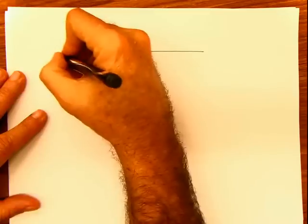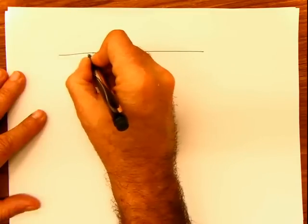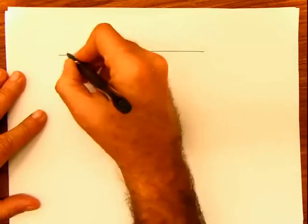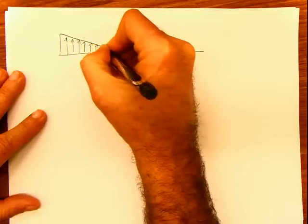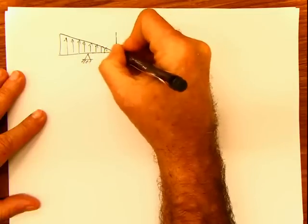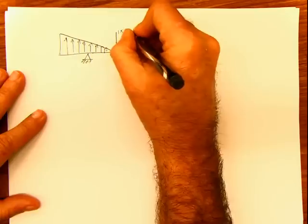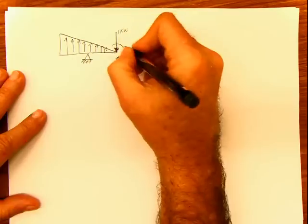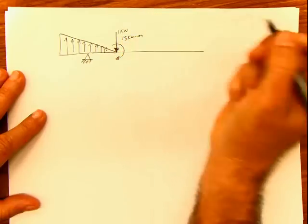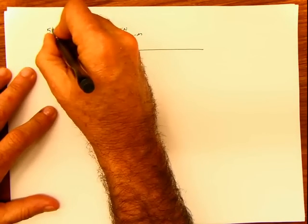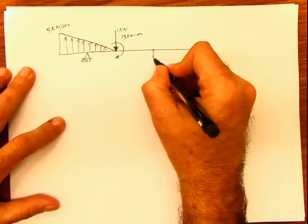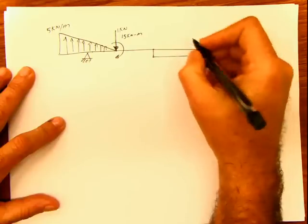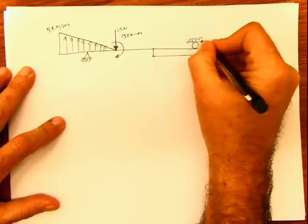I did this problem in class, and we created it with the students. So this is going to be a pin support, and then I'm going to have a load in this direction, and the load comes pointing up. Then we have a concentrated force of 1 kilonewton and a concentrated moment also at that point of 15 kilonewton meter. And then we have a rectangular load acting on the bottom part. And then we have a pin support, a roller support, in the top part.